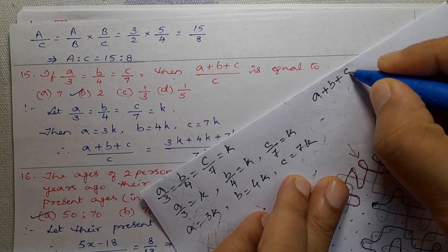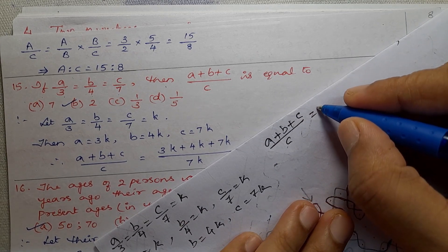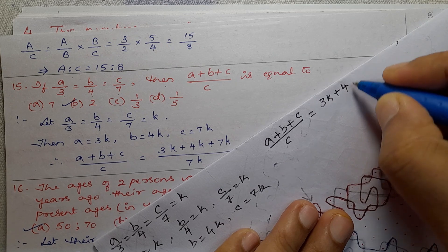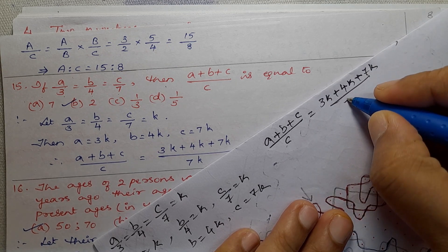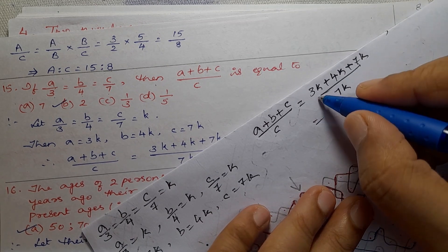So that is equal to A is 3K, and B is 4K, and C is 7K, divided by C is 7K. Equal to how much?